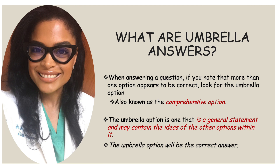Here is a summary of what we went over regarding umbrella answers. When answering a question, if you note that more than one option appears to be correct, look for the umbrella option, also known as the comprehensive option. The umbrella option is a general statement that may contain the ideas of the other options within it. If you see one of these, that is the correct answer. In question number two, you will see this in action.